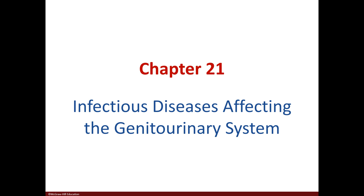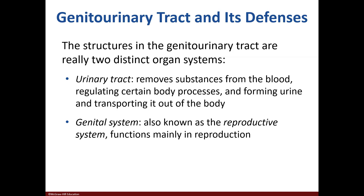We made it to the end. Chapter 21 will focus on infections of the genital urinary system. There are two parts of the genital urinary system: the urinary tract, whose function is to remove or filter unwanted substances from blood and form urine, and the genital system, whose main function is reproduction.